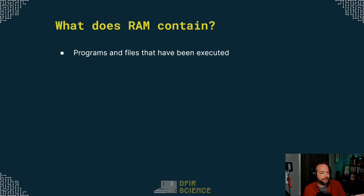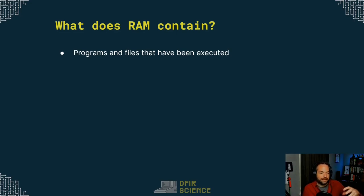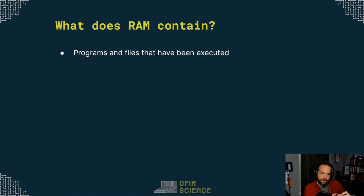If you downloaded a picture on Instagram, a picture from a web page, played a game — all of that data and that connection to the game server is also loaded in RAM. The game client does something with that data, but everything's happening in memory.